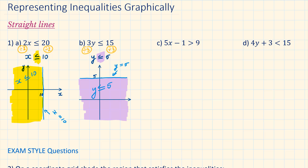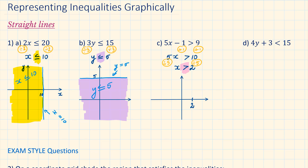Part C: add 1 to both sides, then divide by 5. The solution to this inequality is x is larger than 2. Because it's larger than 2, the 2 is not included, so make sure that you do not draw a solid line. We represent this by a dashed or dotted line. The region shaded in pink represents the inequality x is larger than 2.